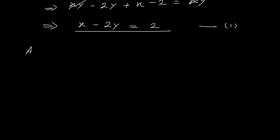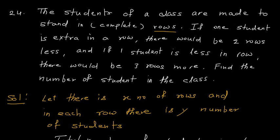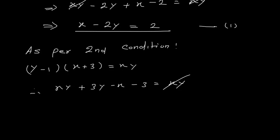As per the second condition: if one student is less in a row, there would be three rows more. So if I decrease y by one — y minus one — then the number of rows increases by three, and the product is still x·y. From this I get x·y + 3y − x − 3 = x·y. Cancelling x·y, this implies −x + 3y = 3. This is the second equation.